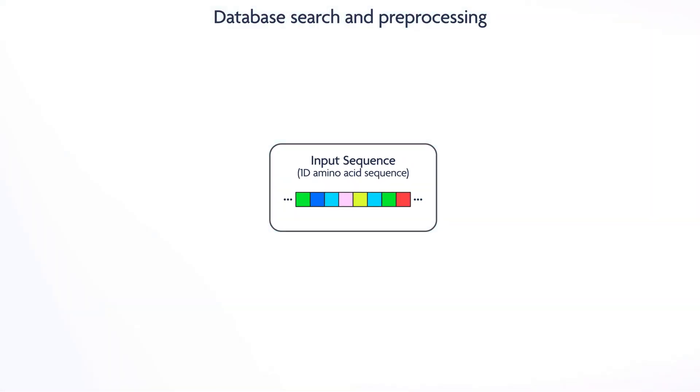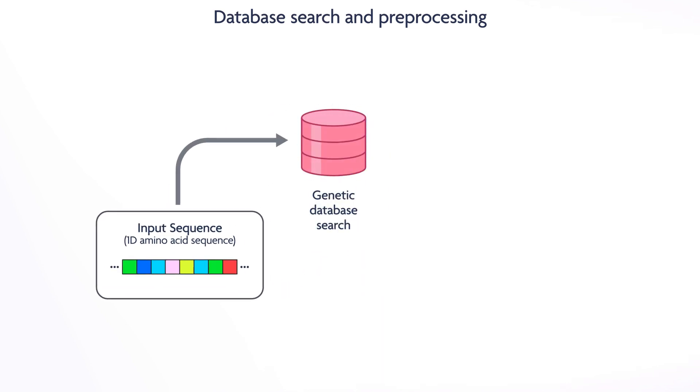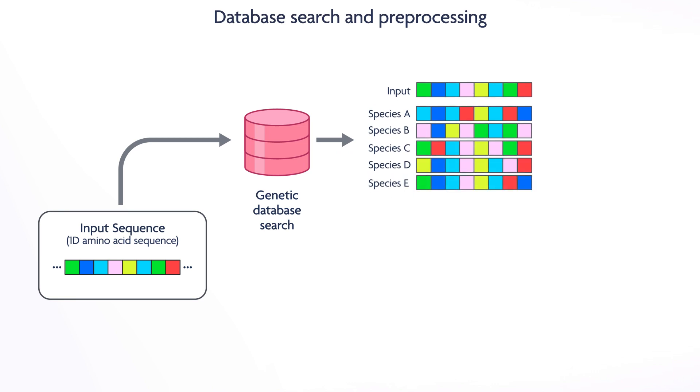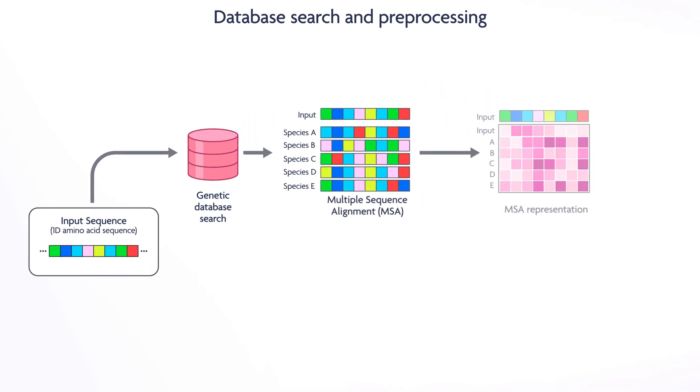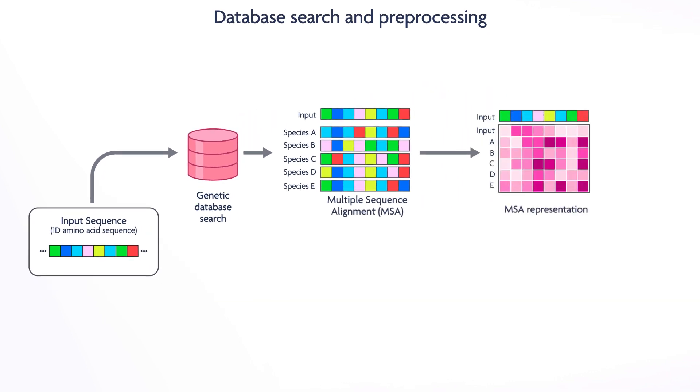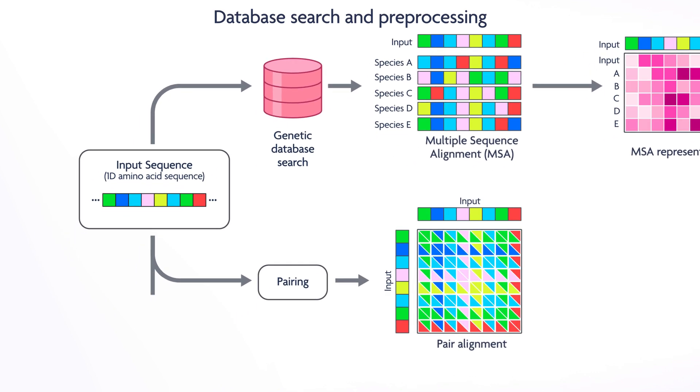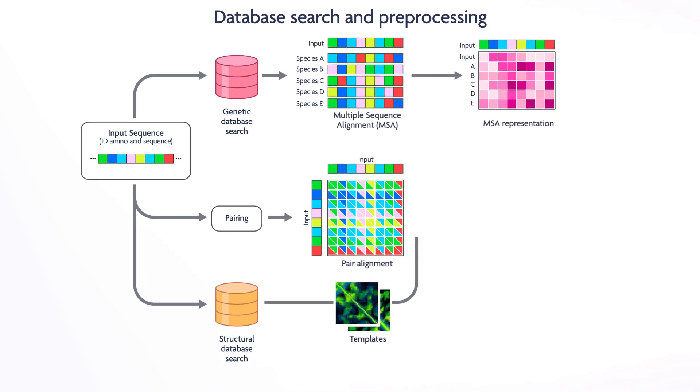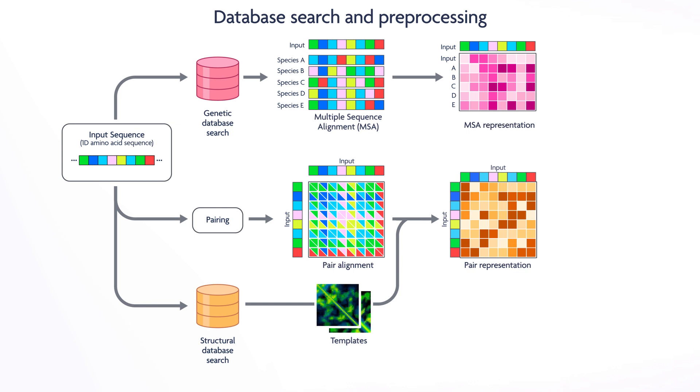When an input sequence of residues or amino acids is entered, AlphaFold compares it to several databases of protein sequences to extract similar sequences from various organisms and tissues to generate a multiple sequence alignment, or MSA, and an initial MSA representation. It also pairs the input sequence and searches databases for templates of similar sequence proteins with experimentally determined structures. This is then used to create an initial pair representation of the input sequence, representing the relationship between every pair of residues within the target protein.